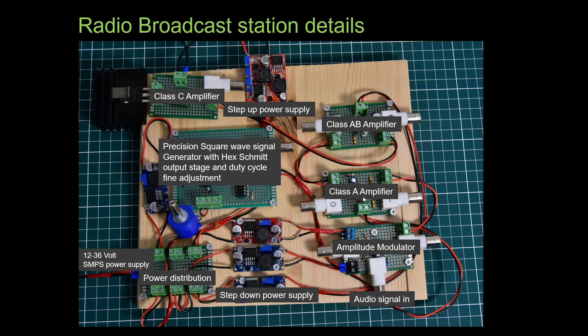A class A amplifier boosts the modulated signal's amplitude for the subsequent stage. The class AB push-pull stage provides high fidelity power amplification, without the crossover distortion typical of class B amplifiers, preparing the signal for the final stage.